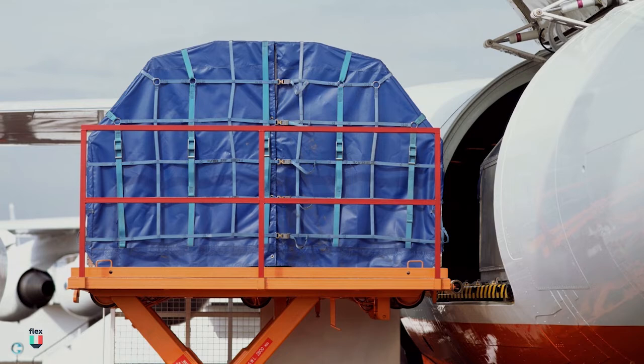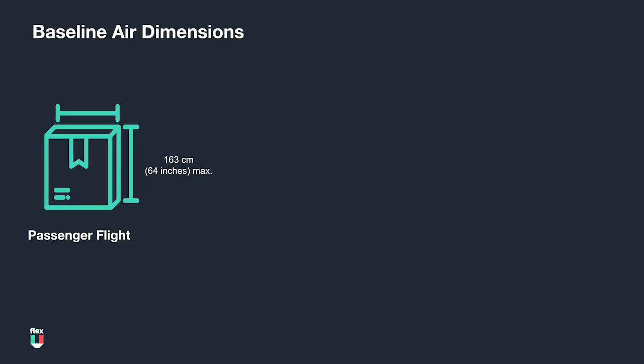All cargo is placed on a metal base, manually or with a forklift. It is shown wrapped to protect from humidity and wrapped in a net to be held together during the flight. There are a few standard dimensions to remember as baselines for air freight.